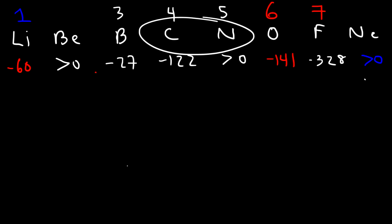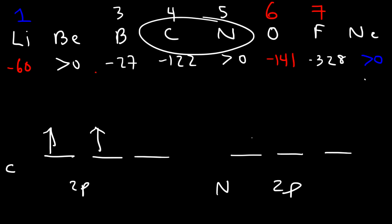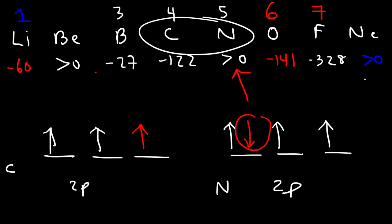Why is nitrogen endothermic but carbon is not? Carbon ends in 2p², nitrogen ends in 2p³. Adding a new electron to carbon presents no issue — it goes into a vacant orbital. But adding one to nitrogen means adding a paired electron into an already half-filled subshell, causing electron repulsion. That electron repulsion makes adding an electron to nitrogen an endothermic process, while carbon has a vacant orbital available.